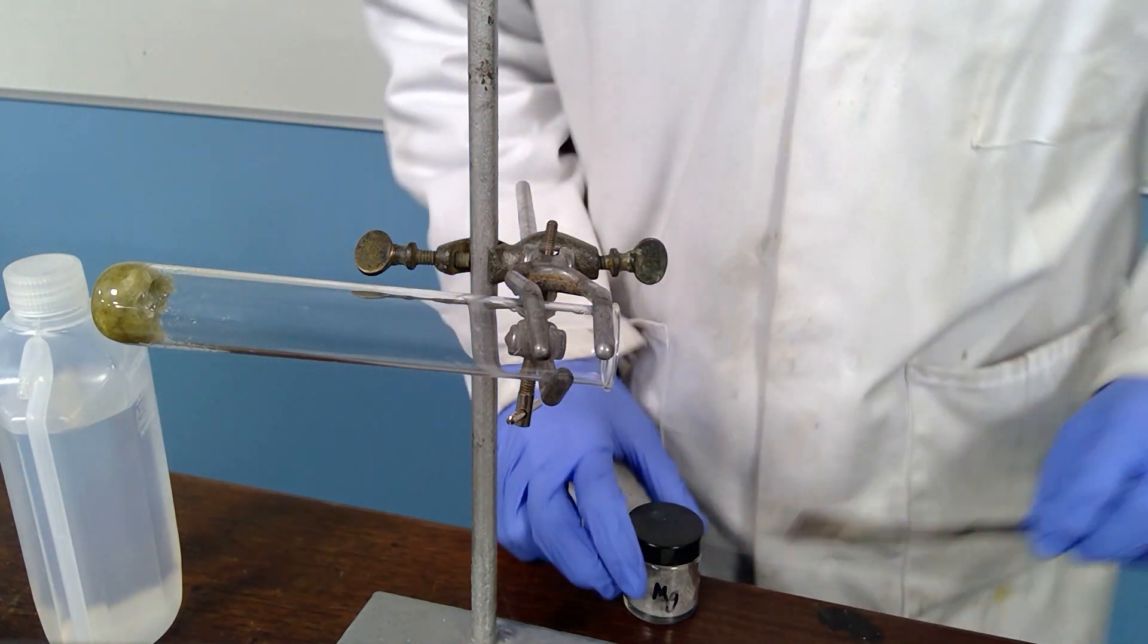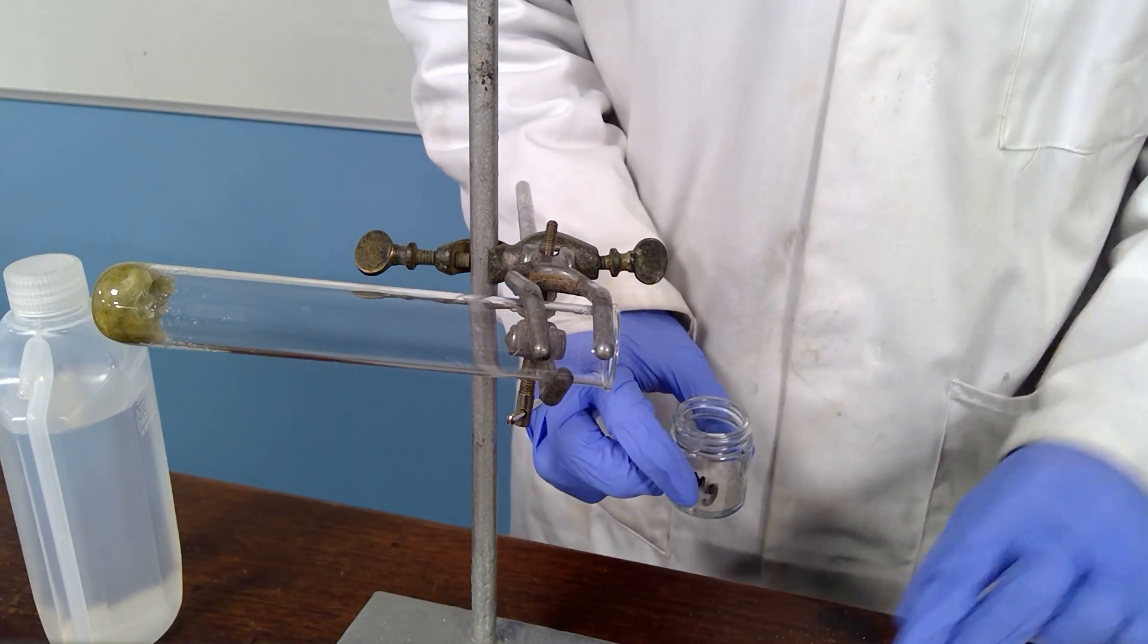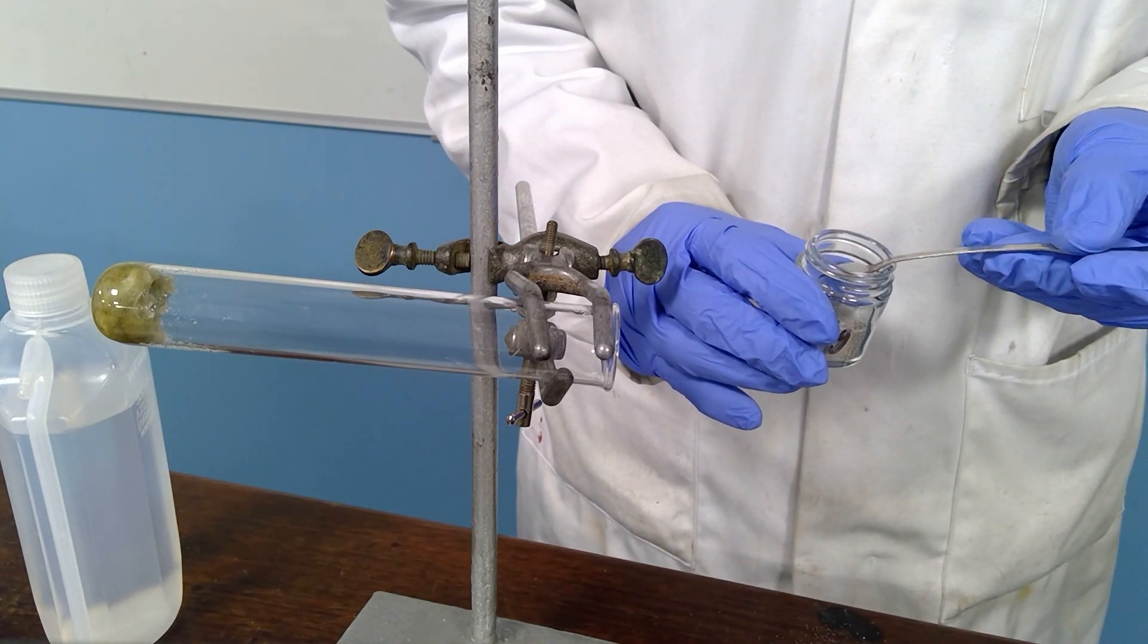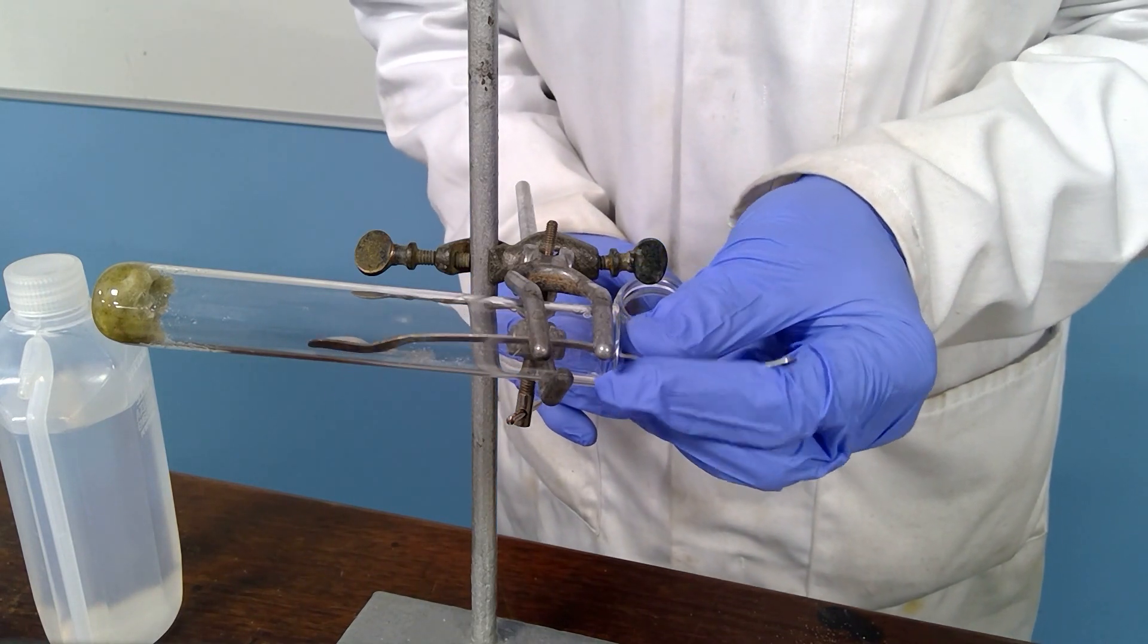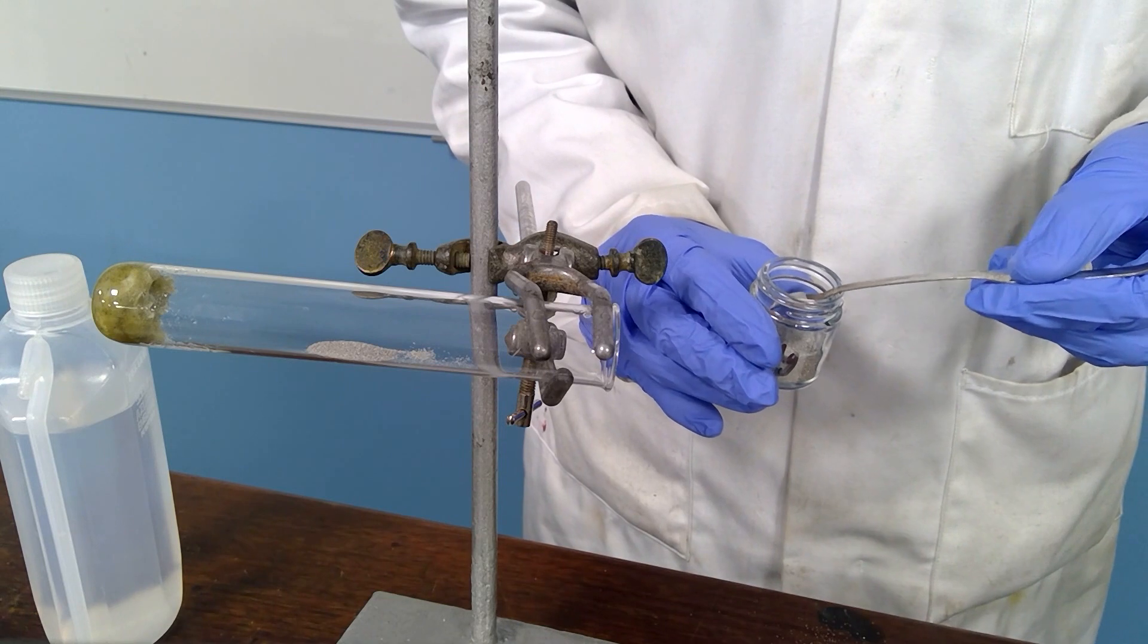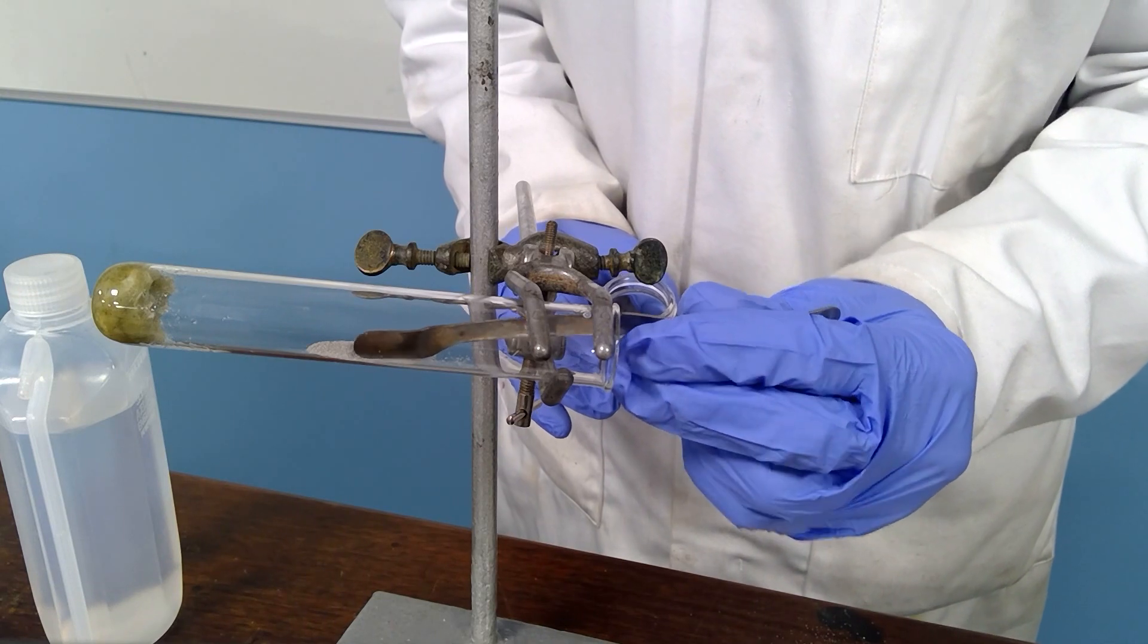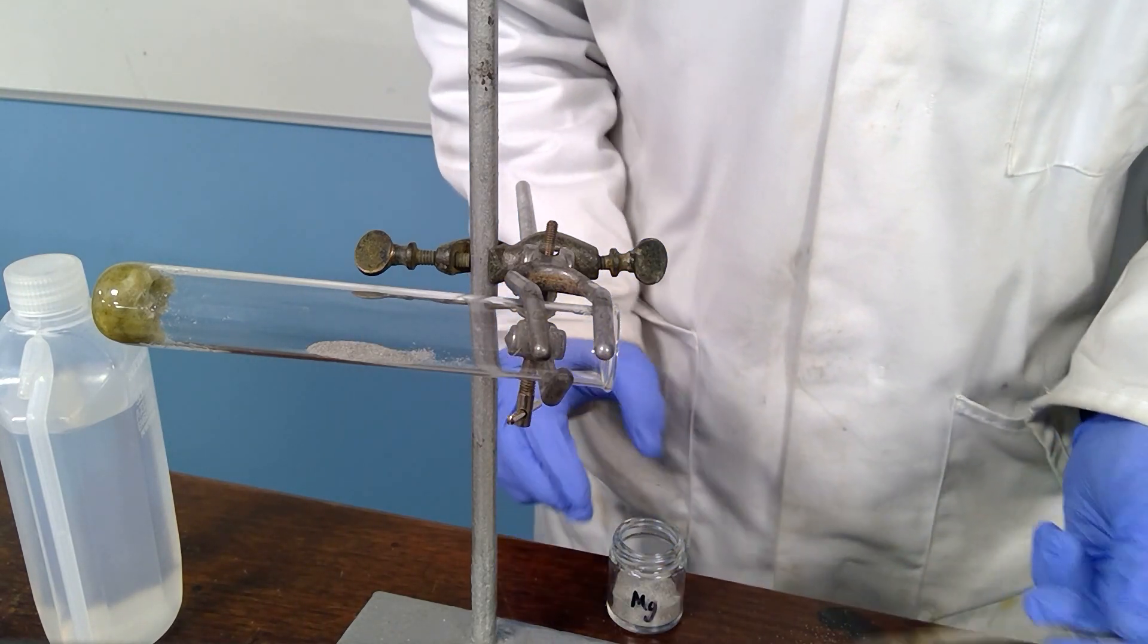I then place some of the magnesium into the tube, roughly halfway along. This magnesium is in the form of magnesium powder with a high surface area and therefore should interact quite nicely. There is the magnesium.